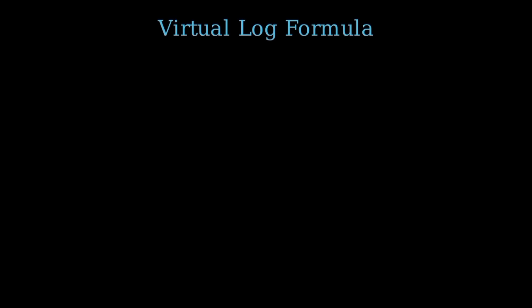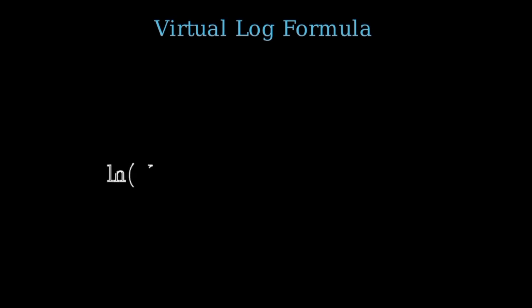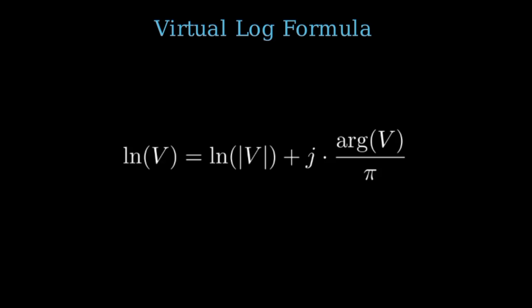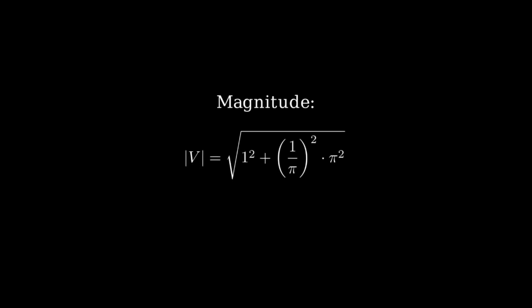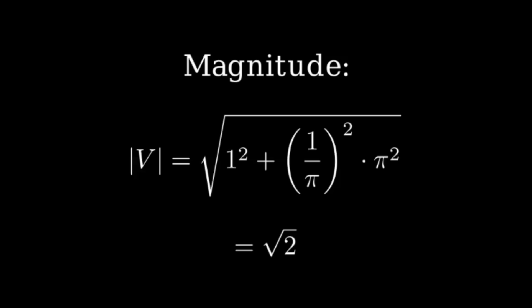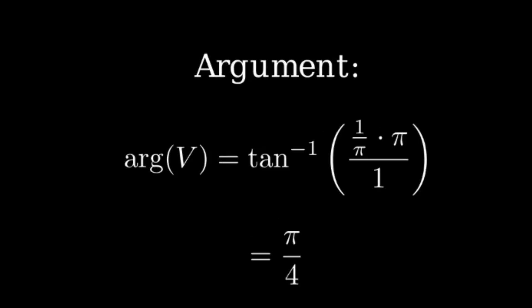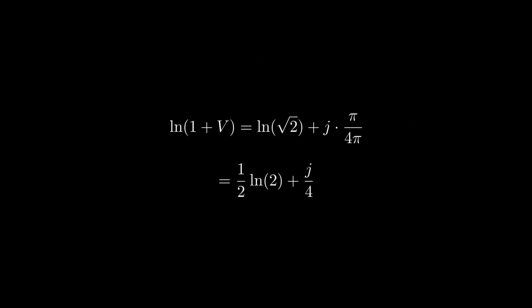In the virtual number system, the logarithm of a number v, which equals a plus b times j, follows a specific formula. Instead of using traditional complex logarithms, we define it as: the natural logarithm of v equals the natural logarithm of the magnitude of v plus j times the argument of v divided by pi. The magnitude of v equals the square root of 1 squared plus (one over pi) squared times pi squared. Since (one over pi) squared times pi squared equals 1, this simplifies to the square root of 2. The argument of v equals the inverse tangent of (one over pi times pi divided by 1), which simplifies to the inverse tangent of 1, equal to pi over 4. Applying the virtual log formula, the natural logarithm of 1 plus v equals the natural logarithm of the square root of 2 plus j times (pi over 4) divided by pi, which simplifies to one-half times the natural logarithm of 2 plus j over 4.